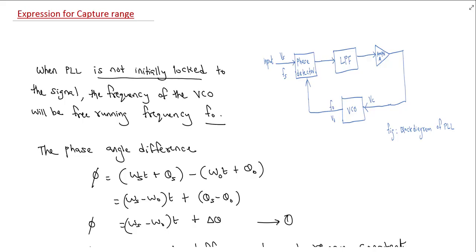We have a phase difference. The phase difference is the phase between the input and VCO signals. Fs is the input signal frequency and F0 is the VCO frequency. The phase difference is the angular frequency term: omega_s * T + theta_s minus omega_0 * T + theta_0. This gives the phase difference value.